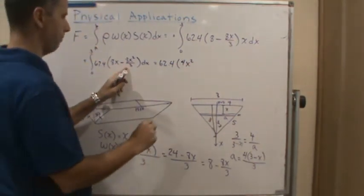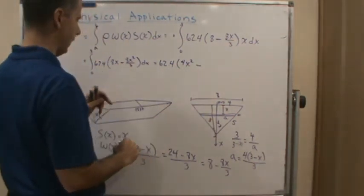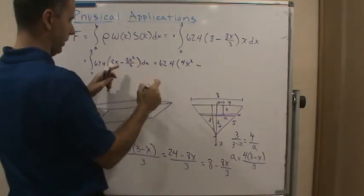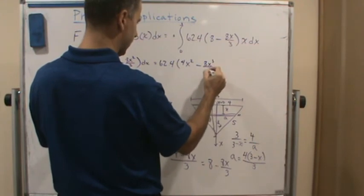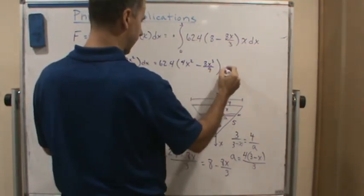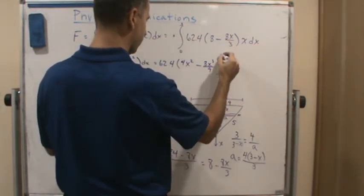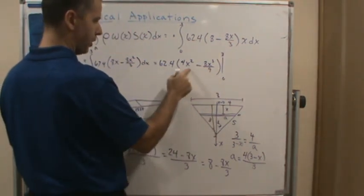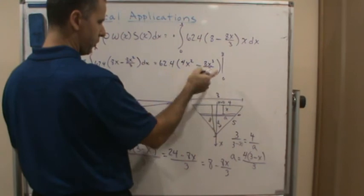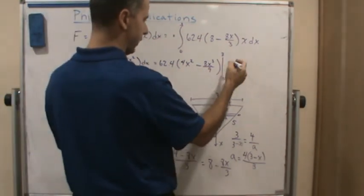This is going to end up being 4x squared minus, this is going to end up being what? 8 ninths. So 8x cubed over 9. And this is going to be evaluated from 0 to 8. And of course, because we've got x's in both terms, at 0 this whole thing is going to be 0. So let's just evaluate it at 8.